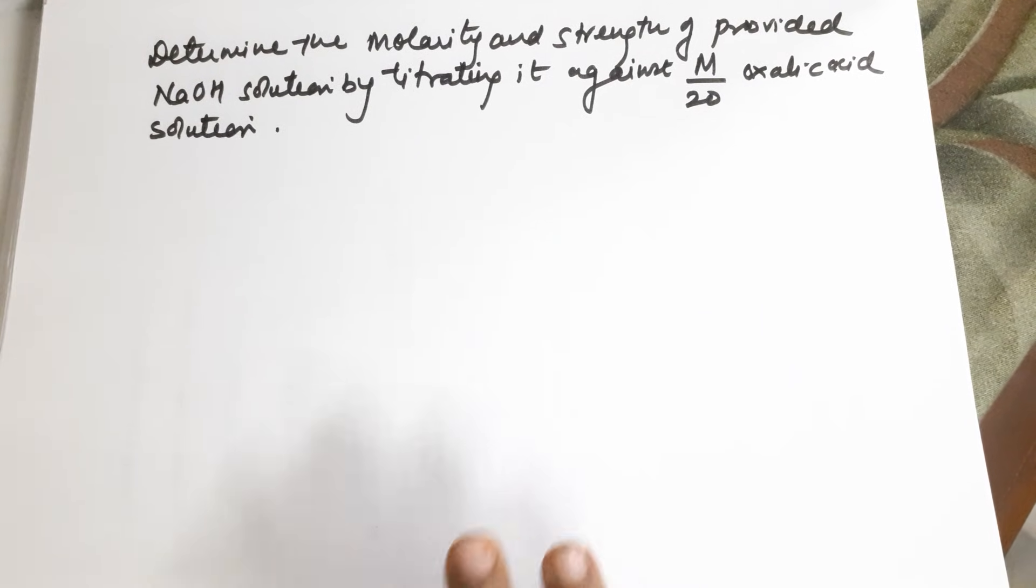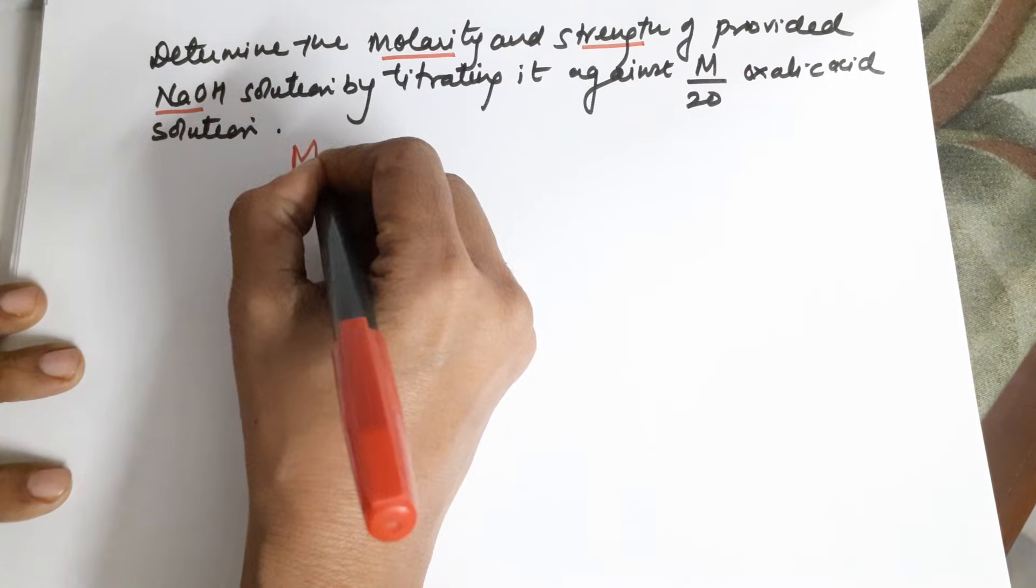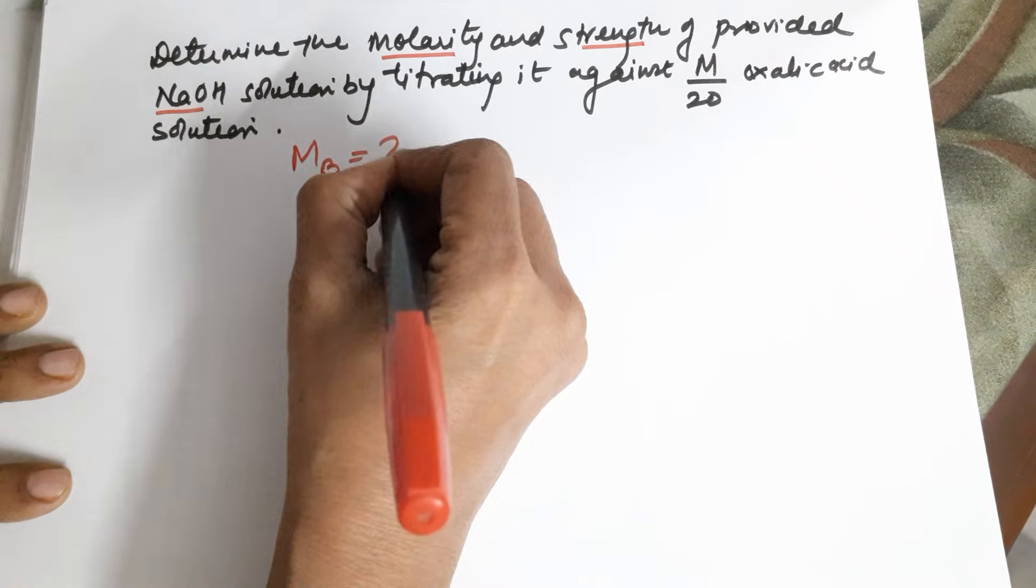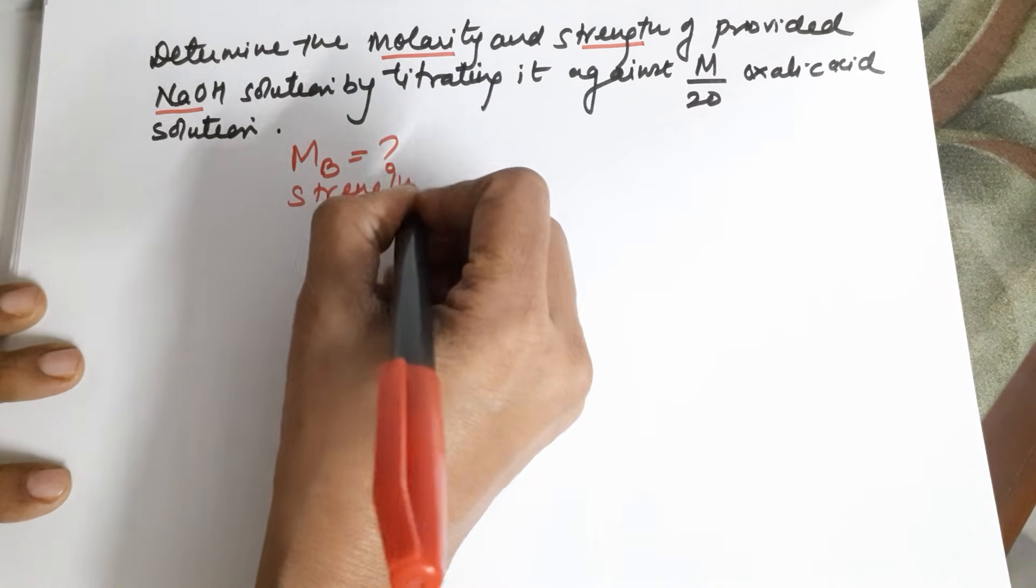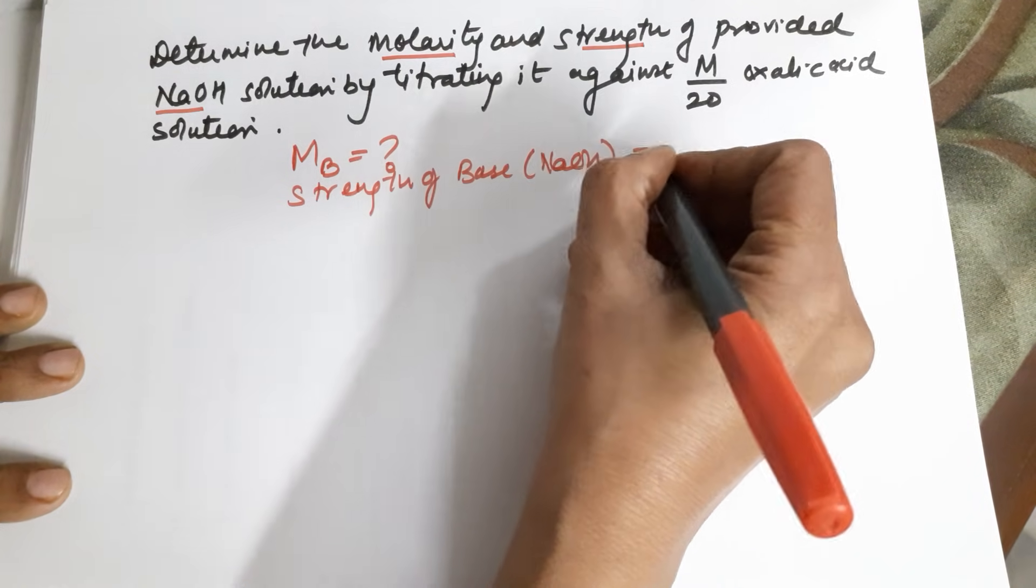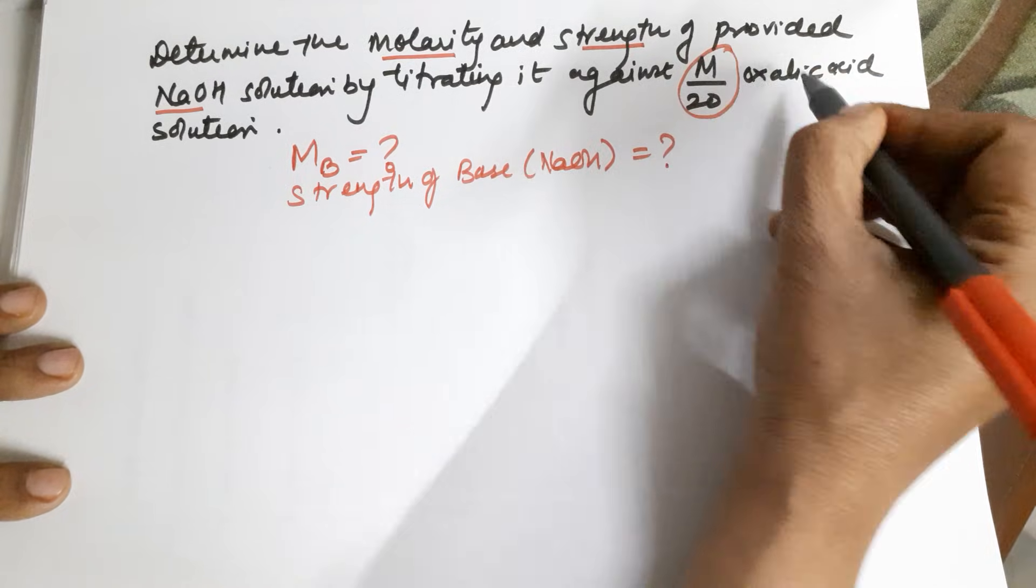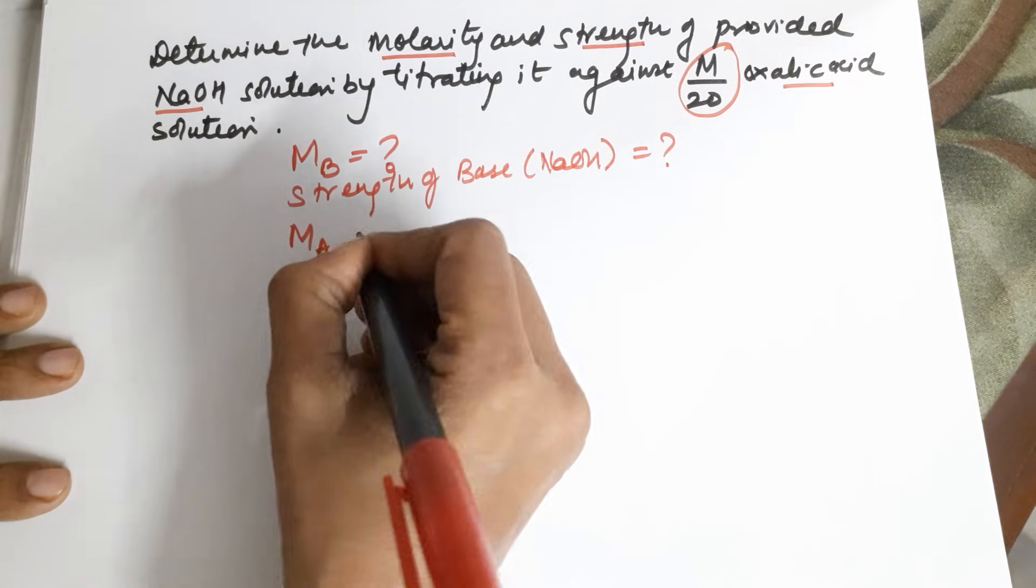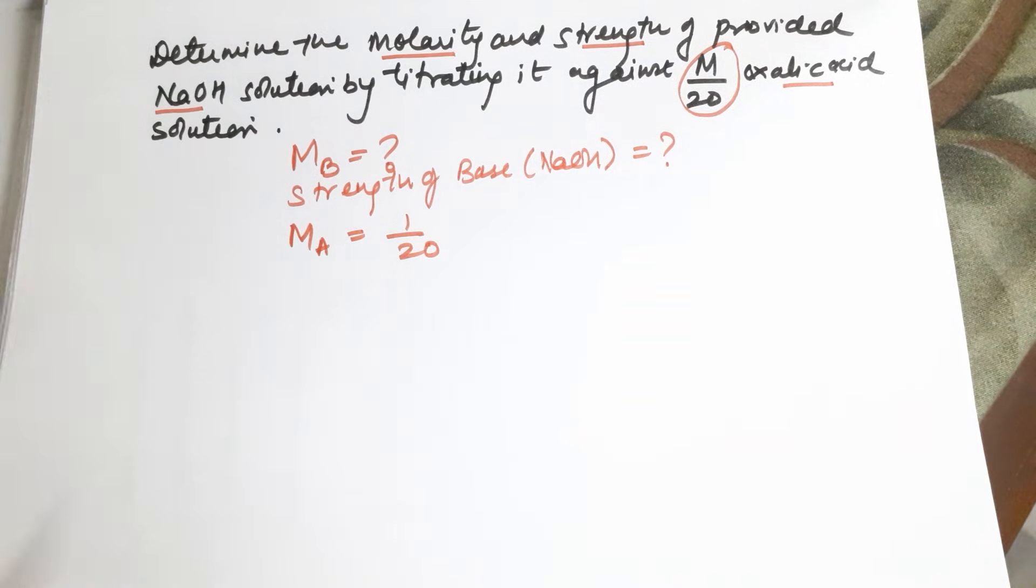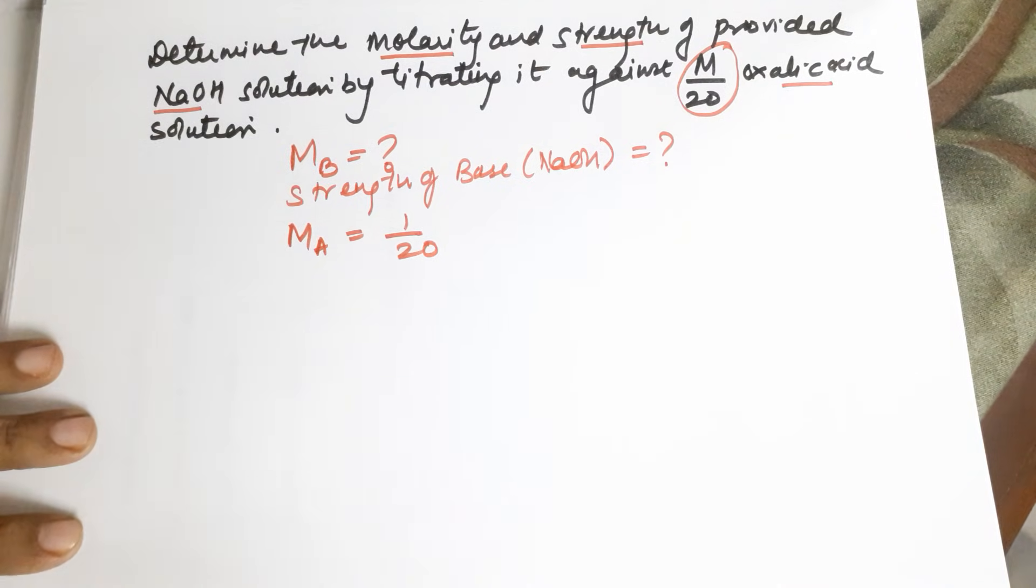Let's take up an example for this. You have to determine the molarity and the strength of the provided NaOH, by titrating it against M by 20 oxalic acid, which means molarity of the acid is 1 by 20. Since it is NaOH required, the indicator is bound to be phenolphthalein.